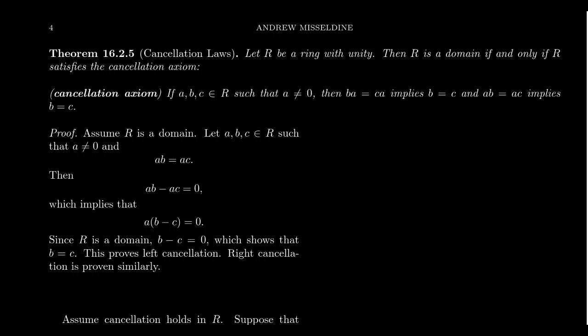Let's first assume we have a domain. Therefore we have the zero product property. Consider an equation for which cancellation would apply: AB equals AC. We want to prove that B equals C.